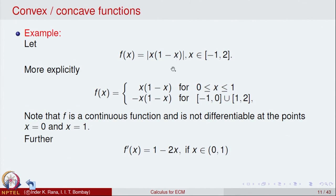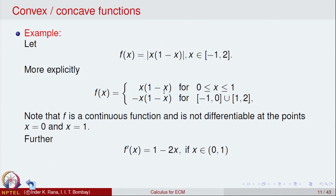For x in [−1, 2], x could be negative or positive. The absolute value of a real number is the number itself if positive and minus the number if negative. If x is between 0 and 1, then x is positive and (1 − x) is also positive, so the function is defined as x(1 − x) for x in (0, 1).